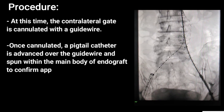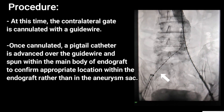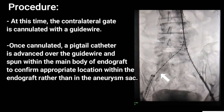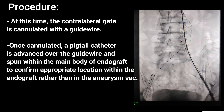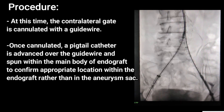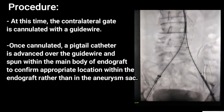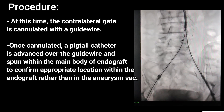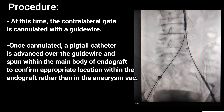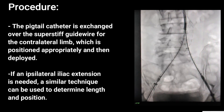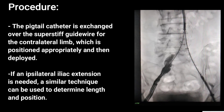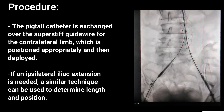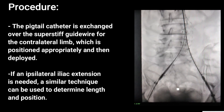The contralateral gate is cannulated with a guide wire. Once cannulated, a pigtail catheter is advanced over the guide wire and spun within the main body of the endograft to confirm appropriate location within the endograft rather than in the aneurysm sac. After that, the pigtail catheter is exchanged over the super-stiff guide wire for the contralateral limb, which is positioned appropriately and then deployed.